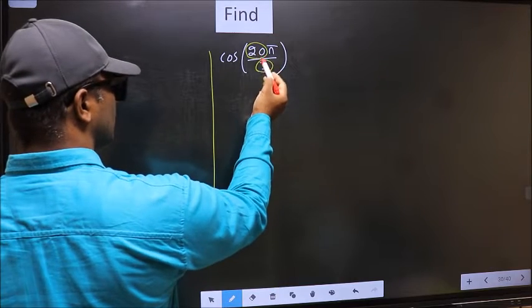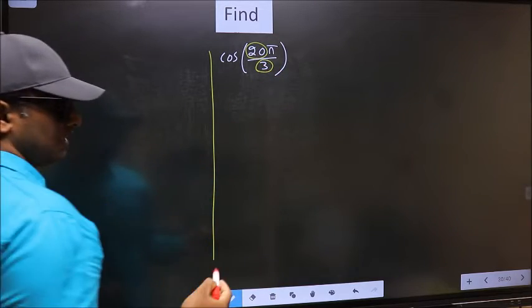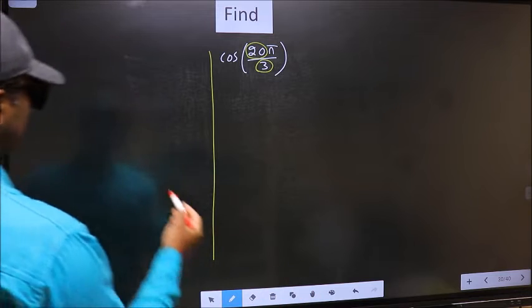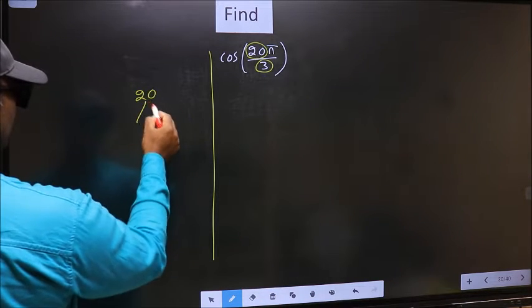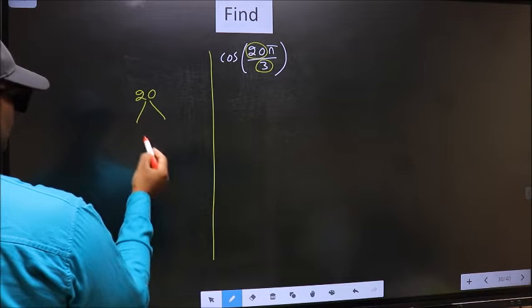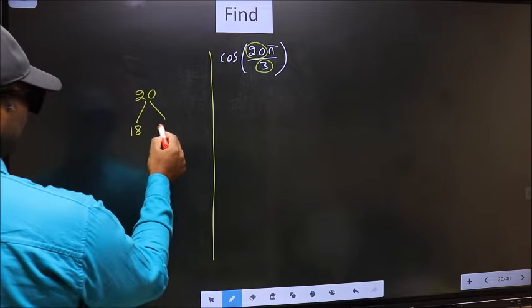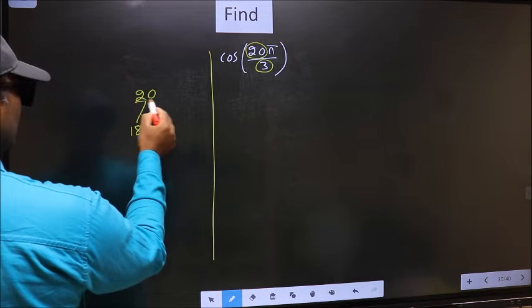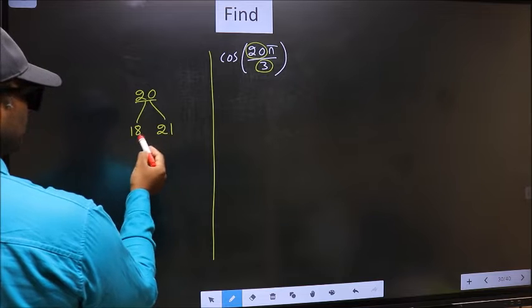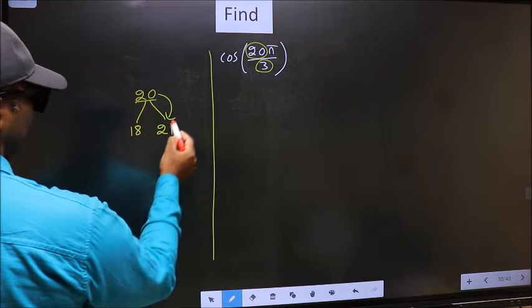Now you should look, 20 is close to which multiple of 3? What I mean is 20 and here you write multiples of 3. That is 18, 21. Now 20 is close to which number? This is close to 21.